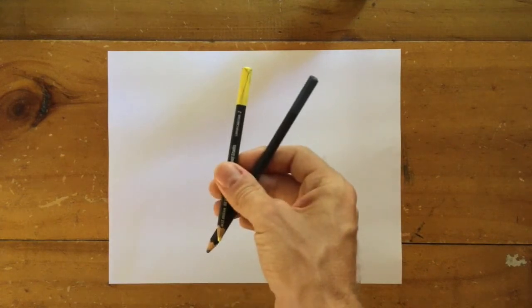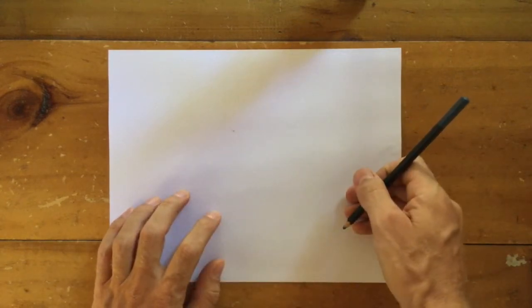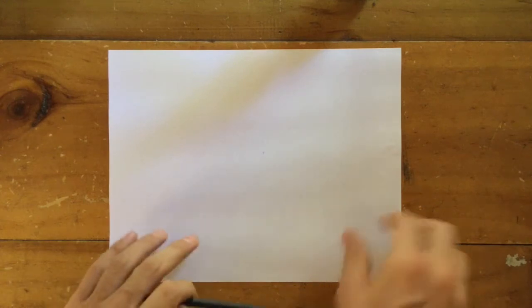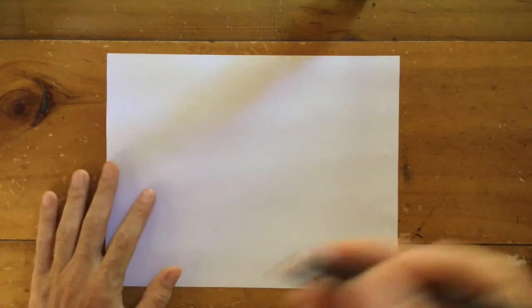So I'm going to switch to coloured pencils this time. And we're going to work a little. Oh, there's a little ant. There's an ant on my paper. He's still there. Okay, he's gone now.